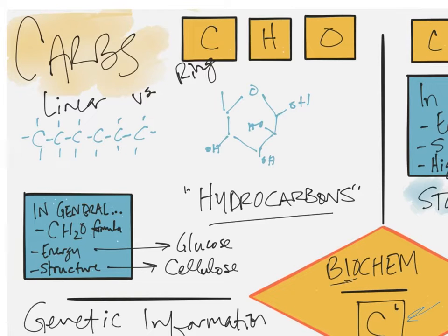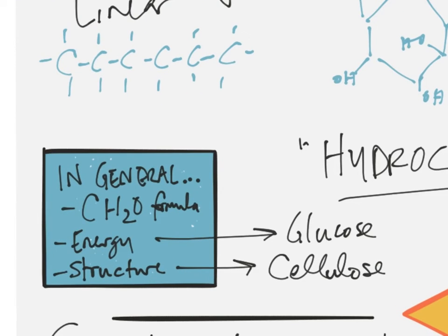So we're going to start off with carbohydrates. Carbohydrates are built with carbon, hydrogen, and oxygen only. In general, carbohydrates have a CH2O formula, some multiple of CH2O. So there's more oxygen in carbohydrates than there is in something like a lipid.